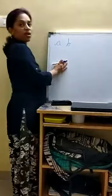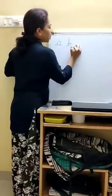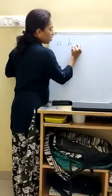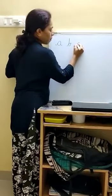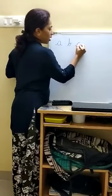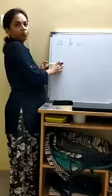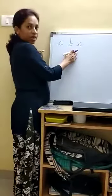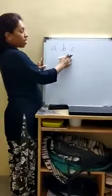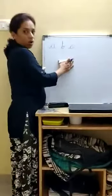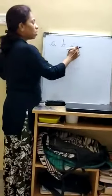Next letter is C. How to write: in between the two lines, take a curve, come back, and leave a tail. C. Name of the letter is C. Sound of letter is K. K-K-cow. K-K-K cat.